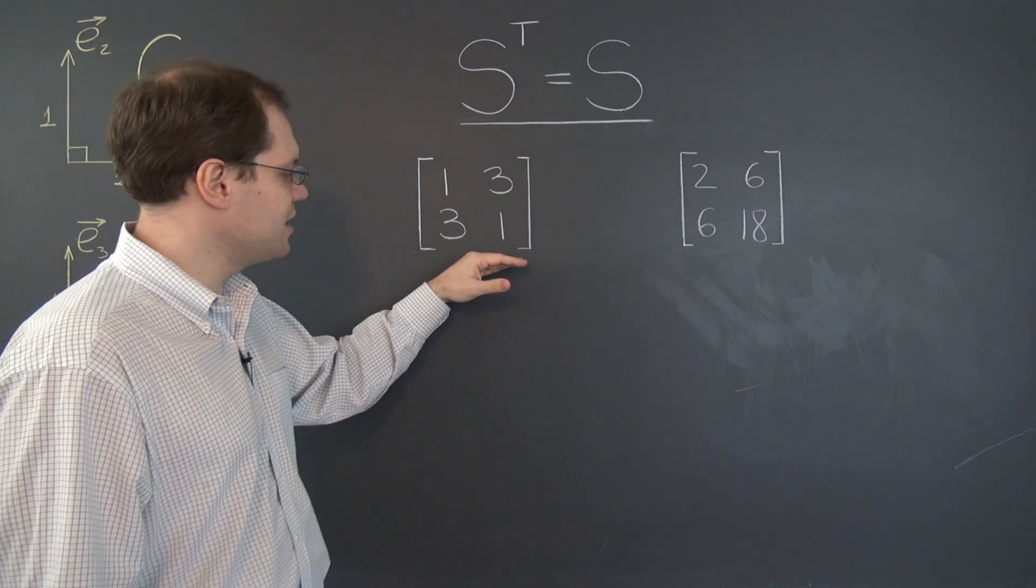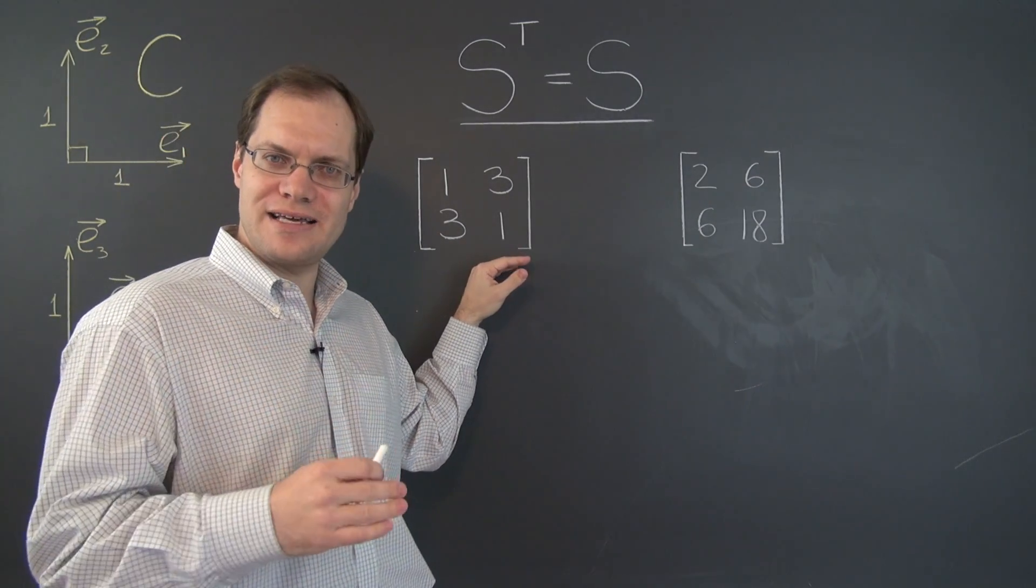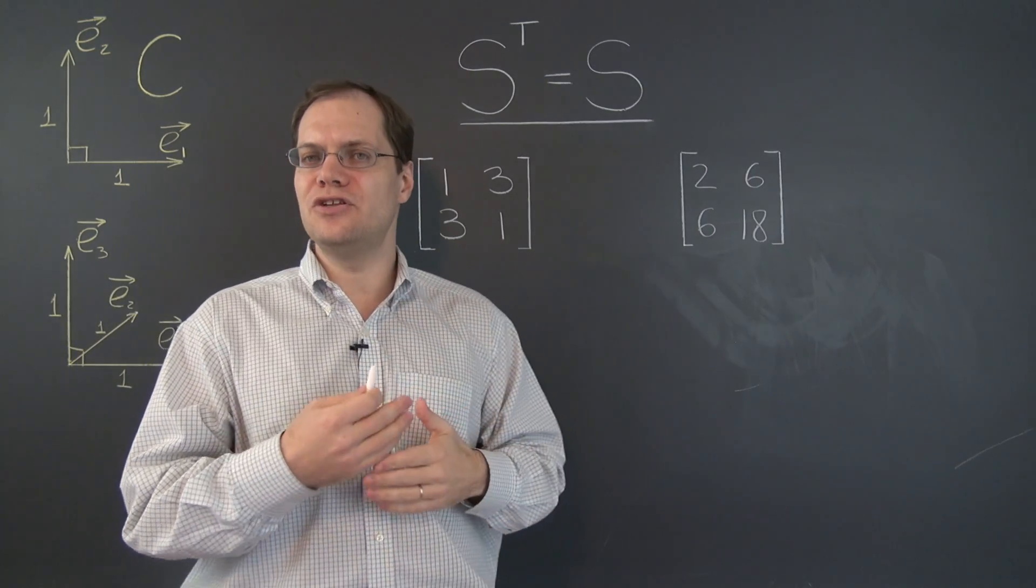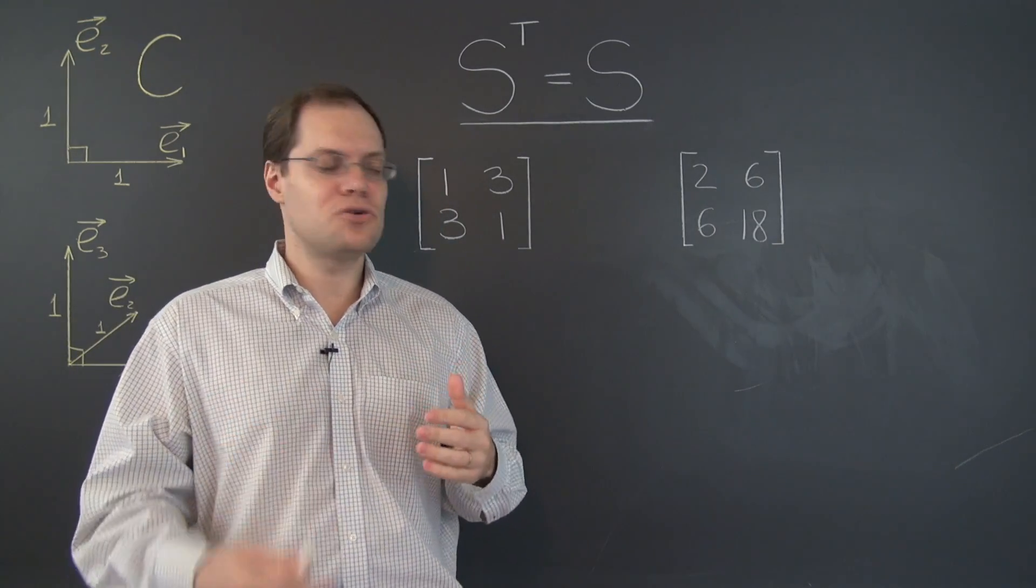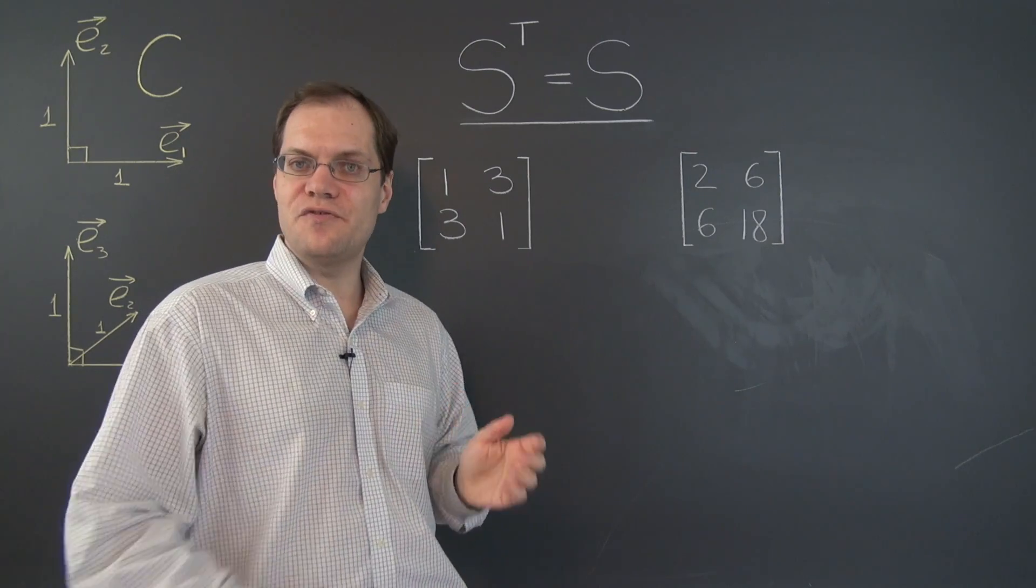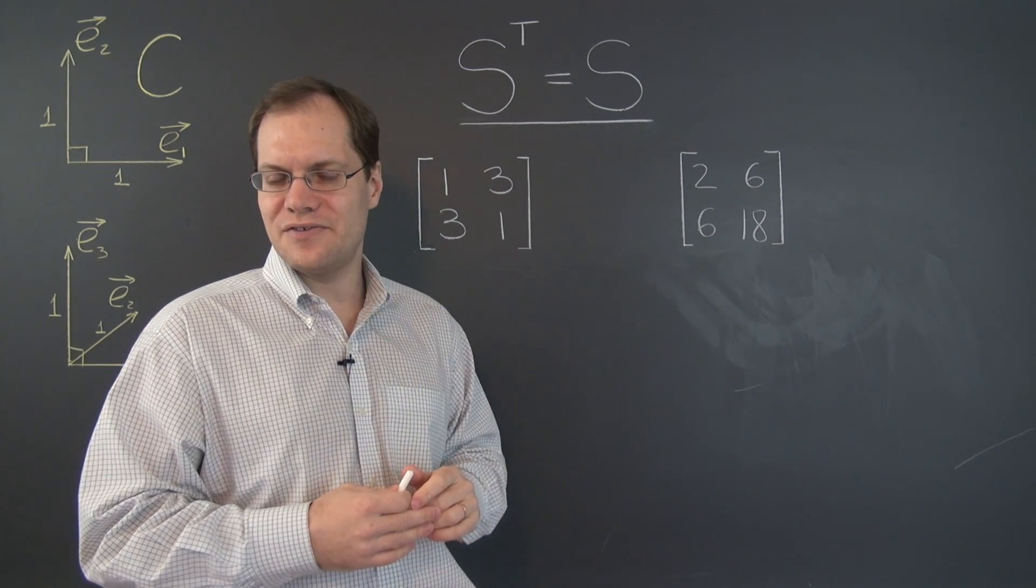So at least in the 2x2 case, if we know one of the eigenvectors, we automatically know the other. And it can also be helpful for larger matrices as well if you found all but one of the eigenvectors.